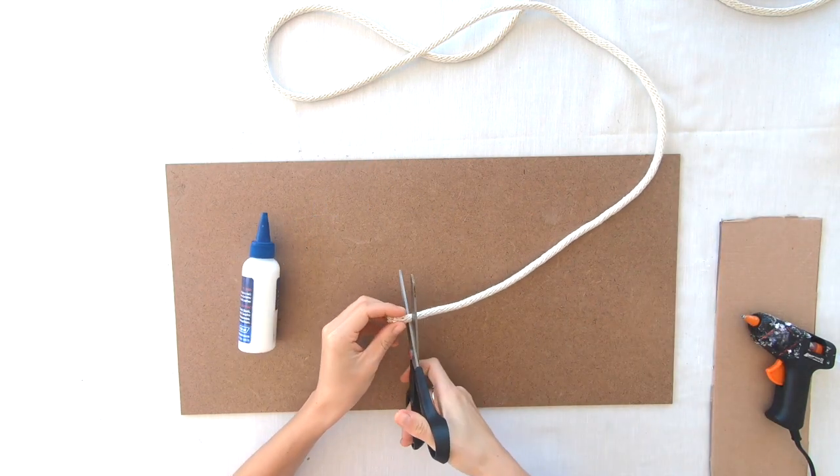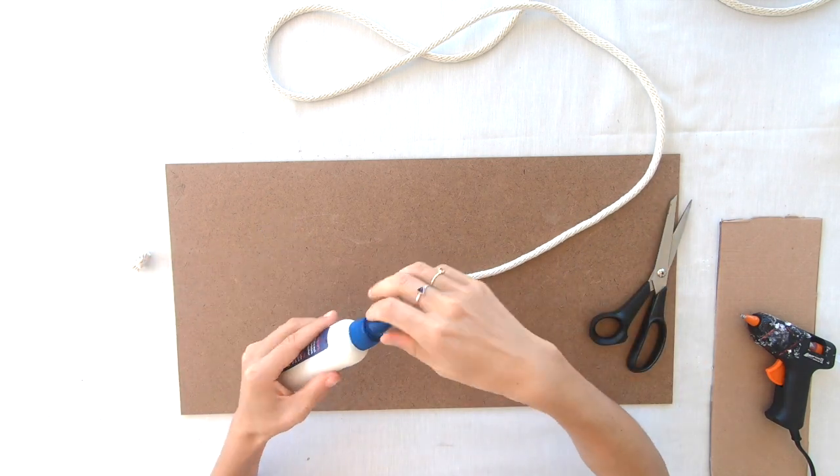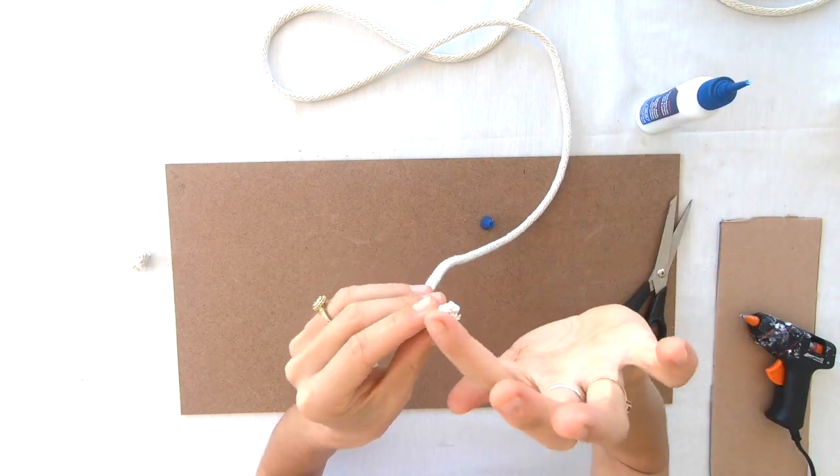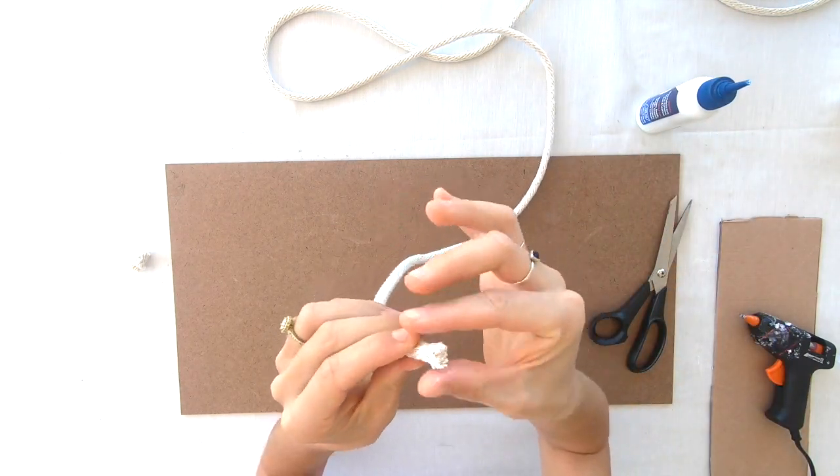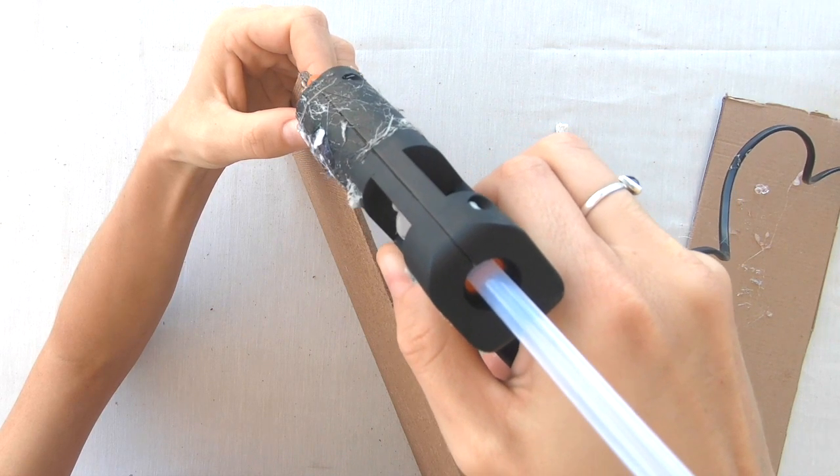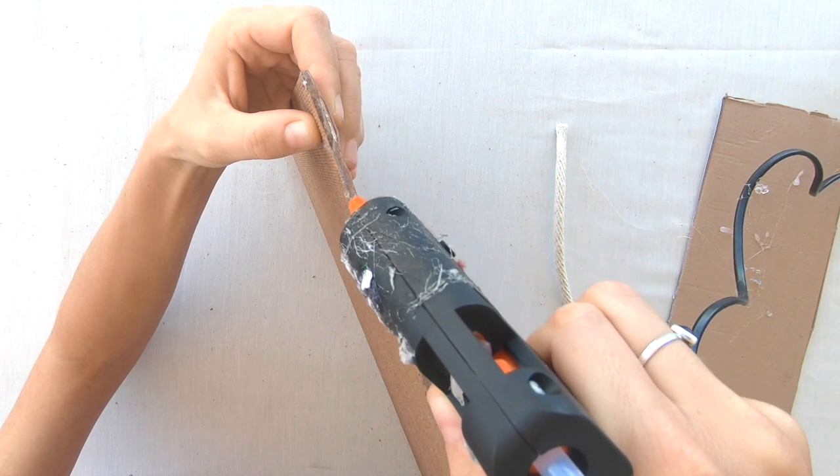The first thing I'm going to do is add some fabric glue to the end of my rope. We are going to start by framing our board on the outer edges by gluing the rope all along the sides of the board.